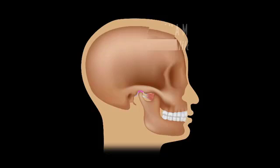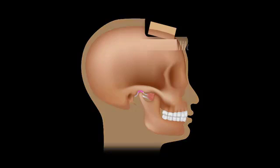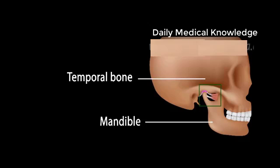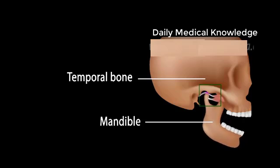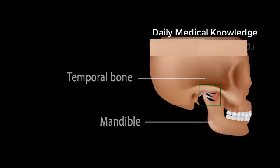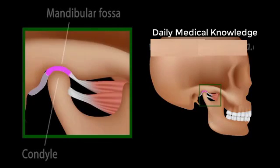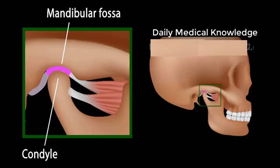The temporomandibular joint, the TMJ, is the joint between the lower jawbone, the mandible, and the temporal bone of the skull. The TMJ is responsible for jaw movement and is the most used joint in the body. The TMJ is essentially the articulation between the condyle of the mandible and the mandibular fossa, a socket in the temporal bone.